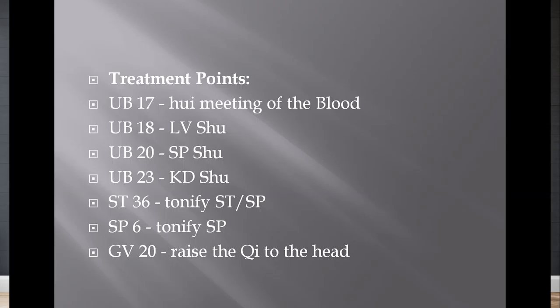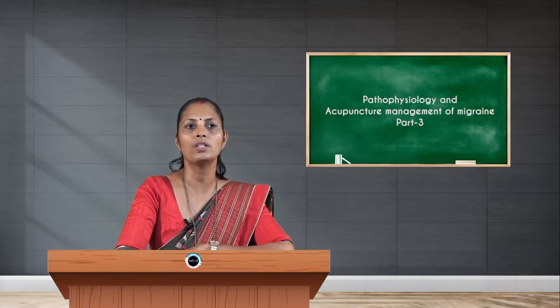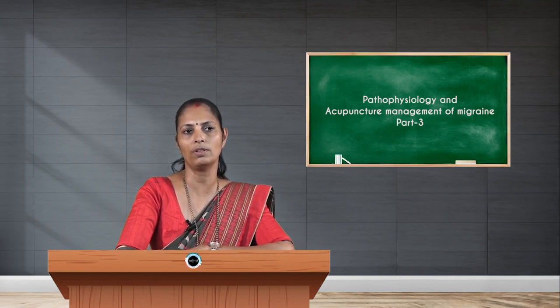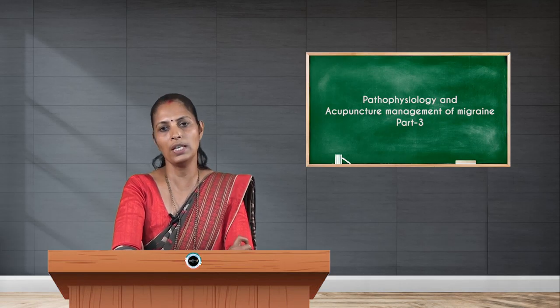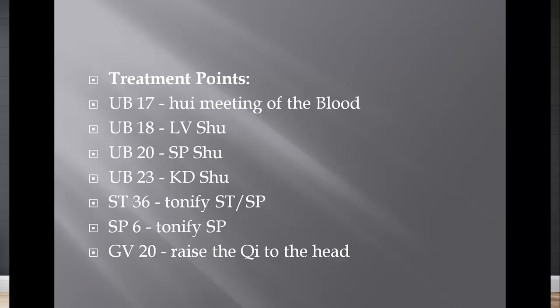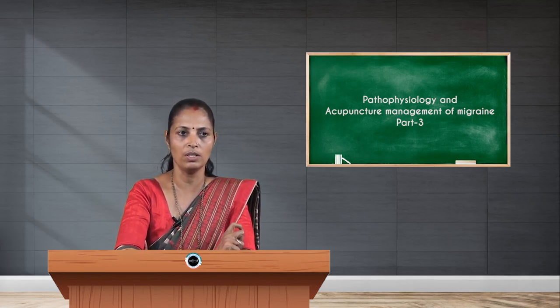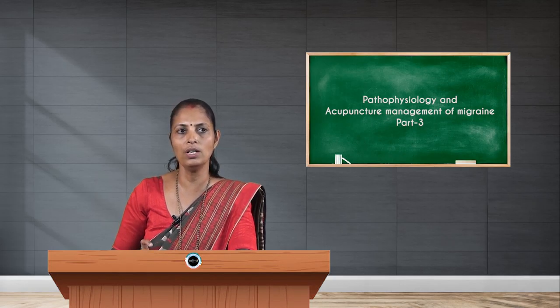Treatment options: UB 17, the influential point for blood, helps in regular flow of blood to all internal organs; UB 18 activates the liver; UB 20 helps in activating the spleen; UB 23 is an important activator of the kidney; Stomach 36 helps in tonifying the spleen and stomach; Spleen 6 as an anti-inflammatory point, since migraine is associated with an inflammatory process; GV 20 helps in raising the chi to the head region.